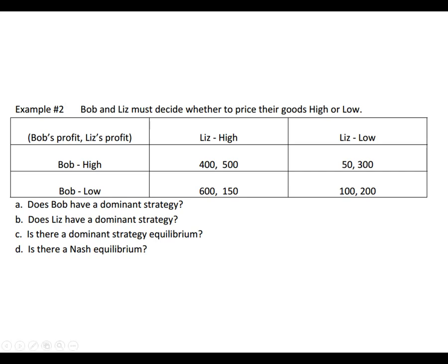Bob's profit is on the left, and Liz's is on the right — that's how to read the one with the commas. We want to know: does Bob have a dominant strategy, does Liz have a dominant strategy, is there a dominant strategy equilibrium, and is there a Nash equilibrium? Let's find out.